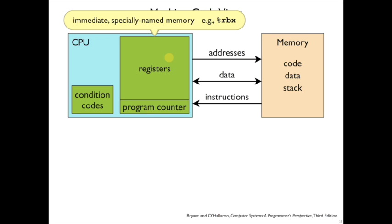And where the locations, instead of having general addresses like 123, have special names like %RBX.